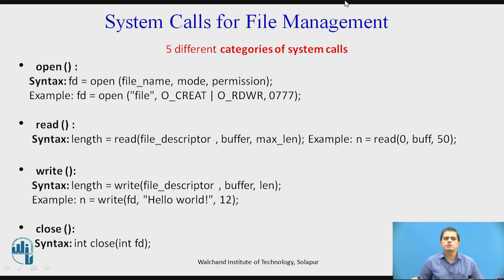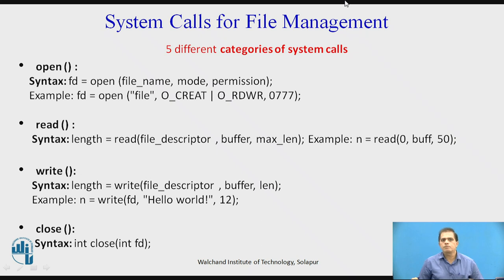The close system call is used to close an open file. It tells the operating system that you are done with the file. Syntax: integer close(integer fd), where fd is the file descriptor of the file to be closed. Return value: if the file is closed successfully it returns 0, else it returns -1.